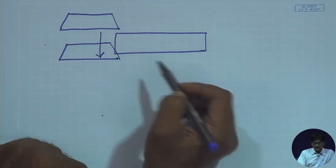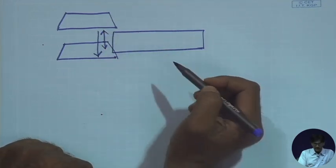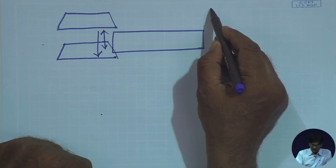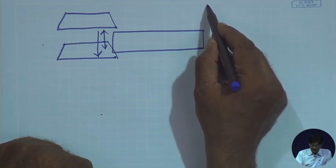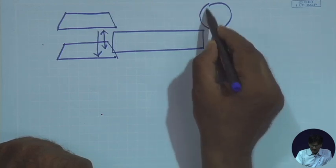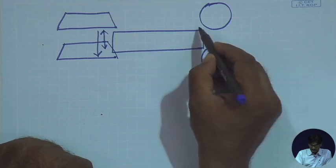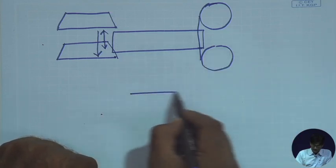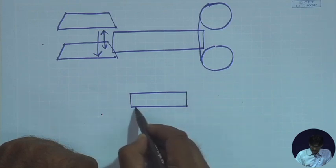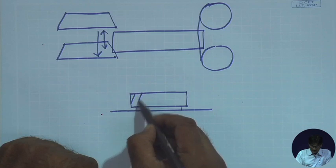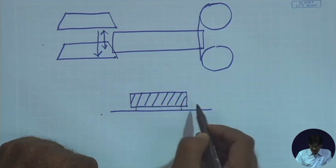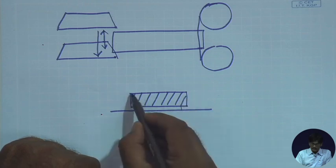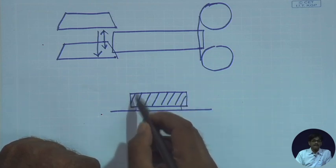The gear shaper cutter reciprocates. On the other hand, if you have a hob cutter or a milling cutter, it has to start from somewhere and end up somewhere beyond the tooth — it has to move through the entire tooth. So if you have a configuration where there is a gear right beside a shoulder, and helical teeth need to be cut, you have a problem with milling or other methods of gear cutting. But in case of shaping, you can move this way.